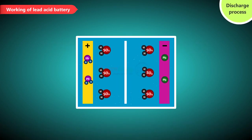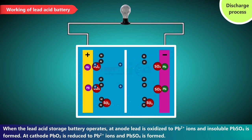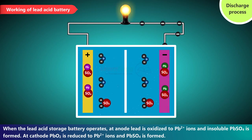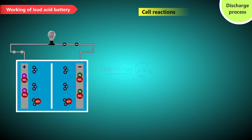Discharge process. When the lead acid storage battery operates at anode lead is oxidized to Pb2+ ions and insoluble PbSO4 is formed. At cathode PbO2 is reduced to Pb2+ ions and PbSO4 is formed. At cathode cell reactions.